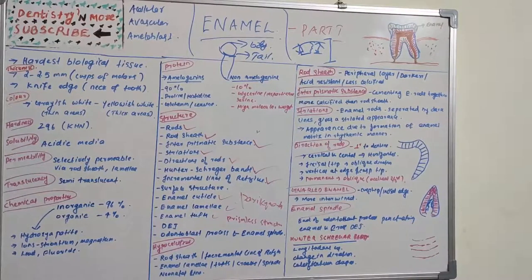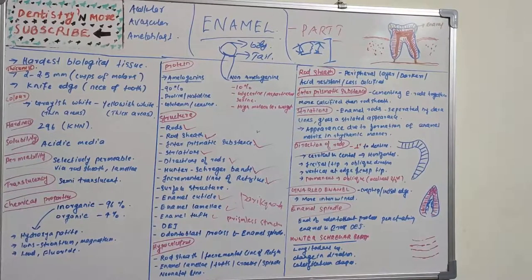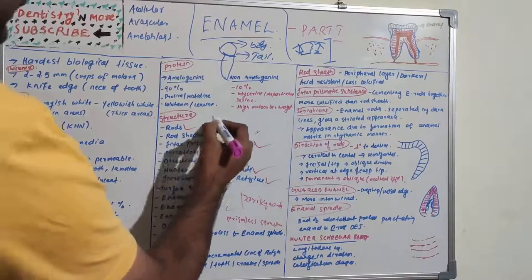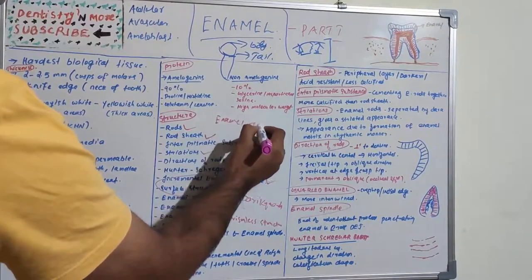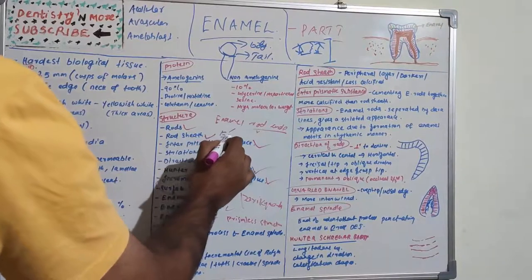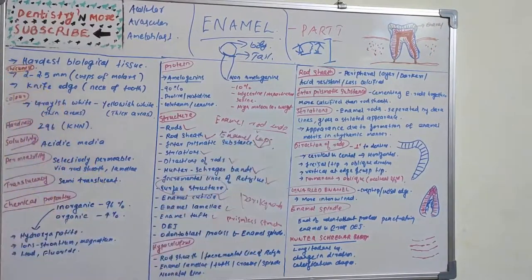Enamel rod ends are another surface structure. They are concave and vary in depth — shallow cervically and deep occlusally — with pits of about 1 to 1.5 micrometers in diameter. Small elevations are known as enamel caps. If the elevation is between 10 to 15 micrometers, it is known as enamel caps.